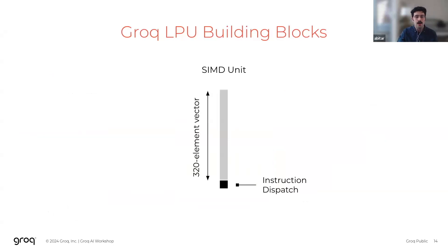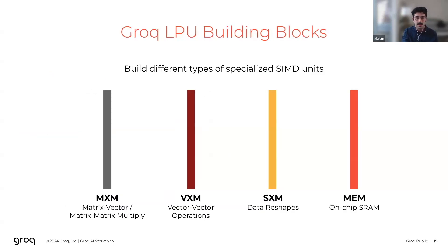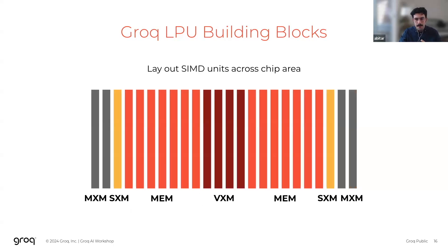The foundational building block of the LPU is the SIMD functional unit. This functional unit employs a set of vector operations and is supported by a very lightweight instruction dispatch unit. You can think of this functional unit as the base class of the architecture. We specialize it into various different types, and here I show four such examples: the MXM for matrix-matrix multiply operations, the VXM for vector-vector operations, the SXM for data reshape operations, and the memory unit for very high bandwidth on-chip memory. We stamp out multiple copies of these types across the horizontal dimension of the chip, with more copies of a given type offering more concurrency for the operations that functional unit supports.